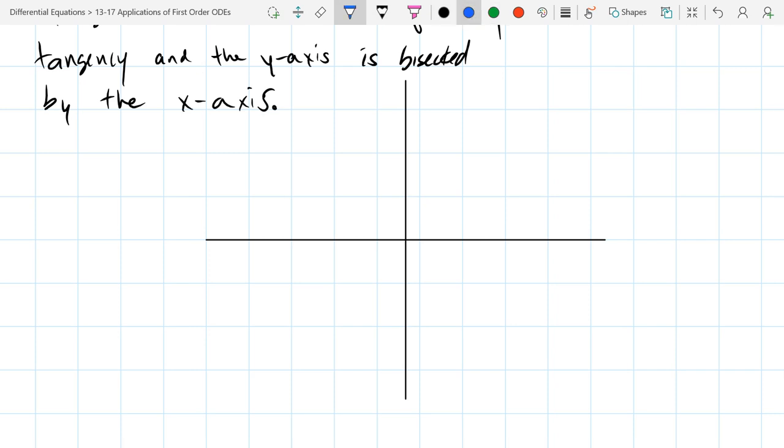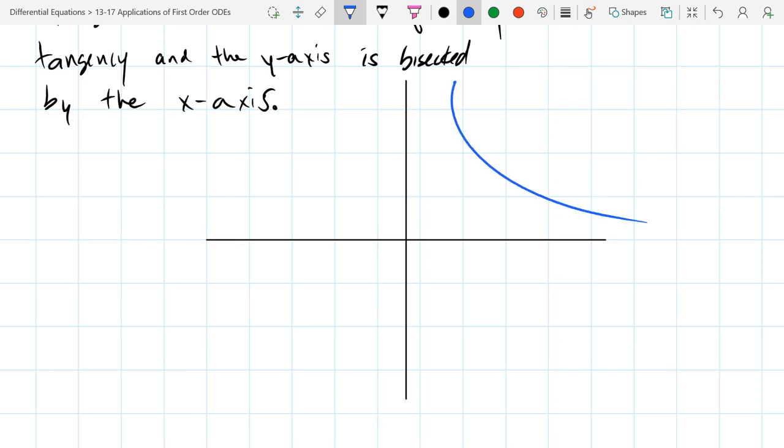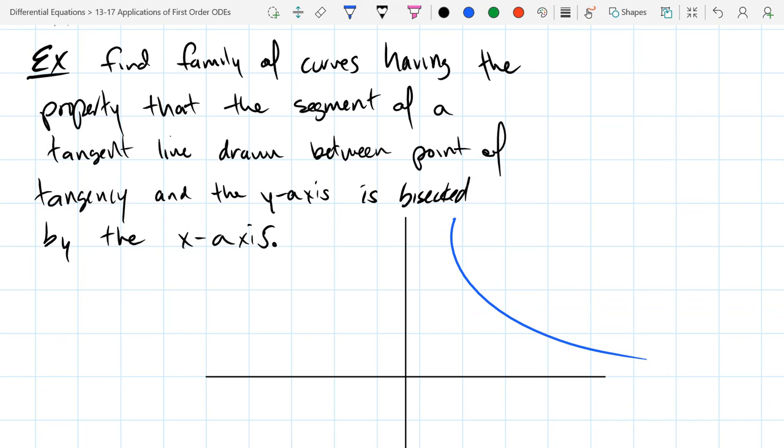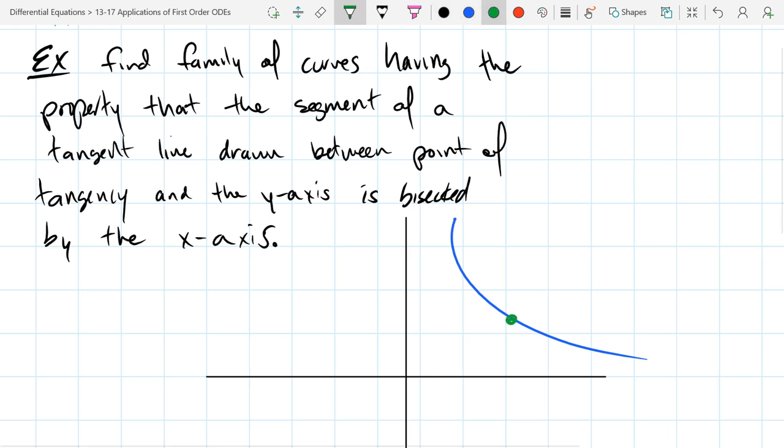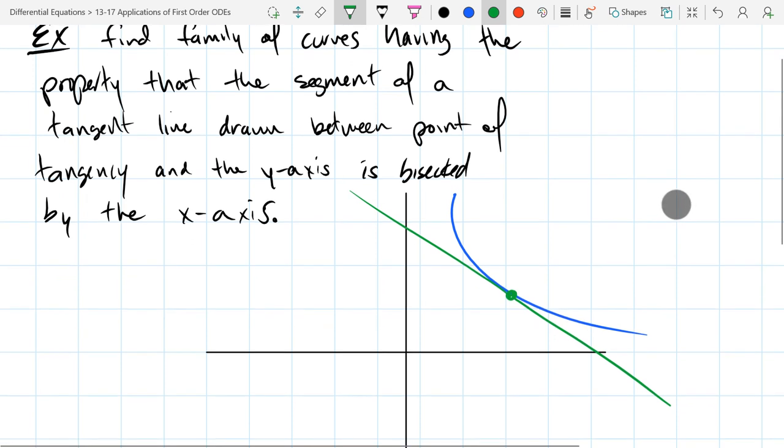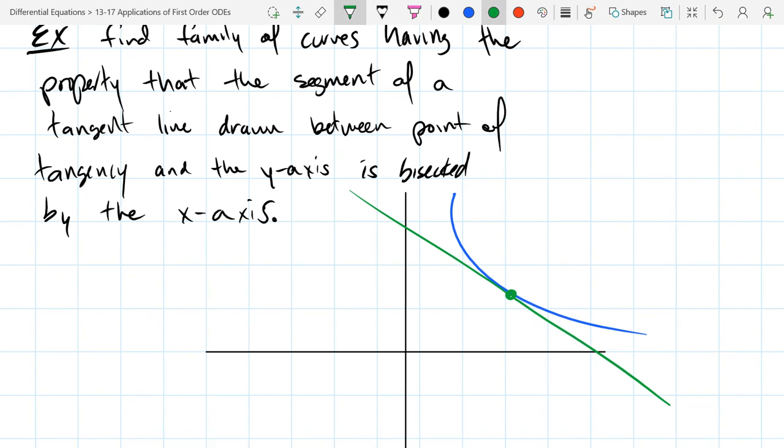So let's pretend that we have a curve that looks something like this. And let's try to recreate the situation that we've described. So let's pretend this curve is one of these curves that has this property. The segment of a tangent line drawn between the point of tangency, so I'm just going to pick some point on the curve, I'm going to draw a tangent, and we're going to see if it has these properties.